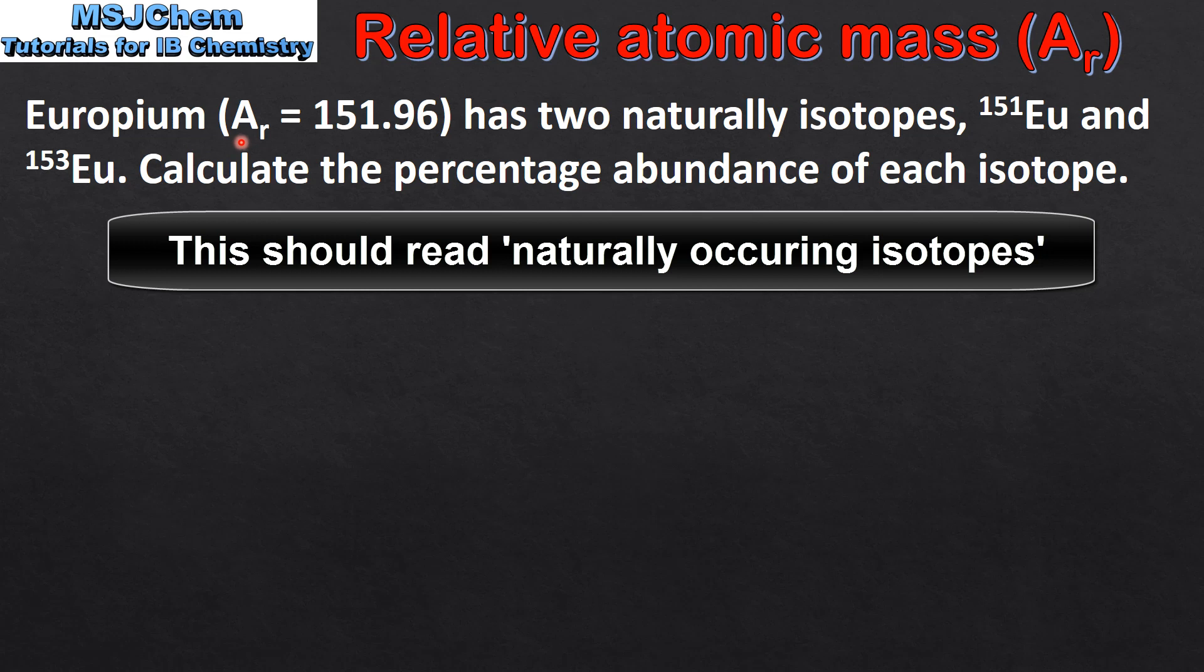In our next example we are given the relative atomic mass of an atom and we have to calculate the percentage abundance of each isotope. Europium, which has a relative atomic mass of 151.96, has two naturally occurring isotopes: Eu-151 and Eu-153.